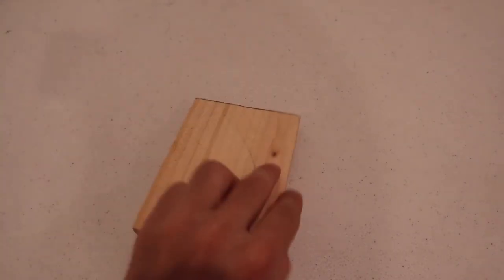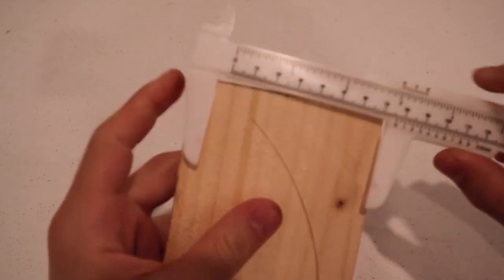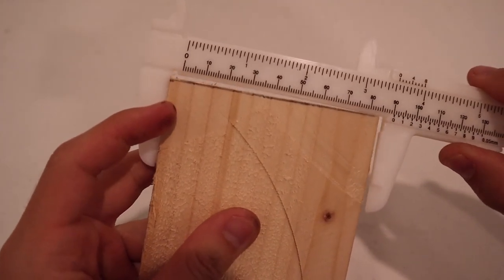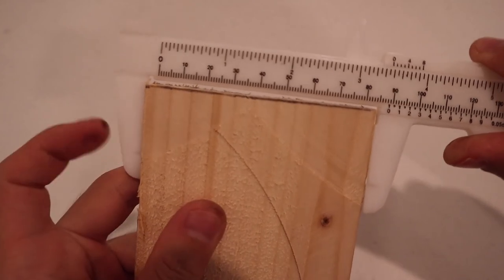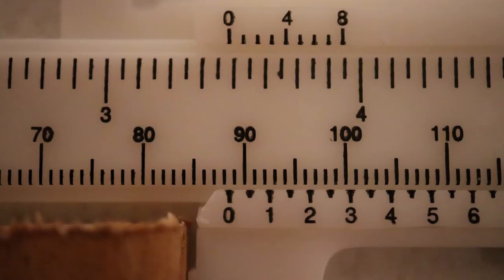But now that we have some of the jargon out of the way, we can finally get to actually taking a measurement, using this block of wood as an example. Once the tool is clamped under the edges of the block, we start by determining which delineation on the main scale lines up best with the zero on the vernier scale. In this case, the zero appears to be between the 88 and 89 on the main scale.